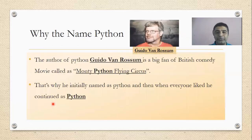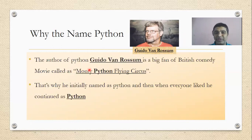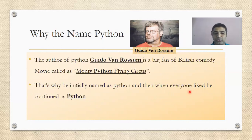Now, who is the author of Python and how was it invented? The author of Python was a big fan of a British comedy show called Monty Python's Flying Circus. When he introduced a programming language, he had the intention of naming it Python. When everyone liked it and said it was a good language, he confirmed they would continue with the name Python.